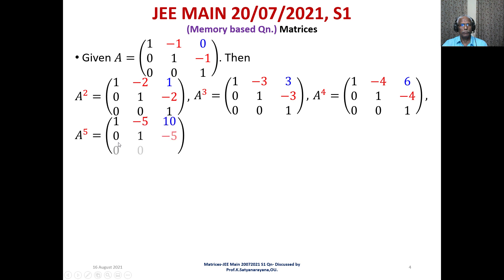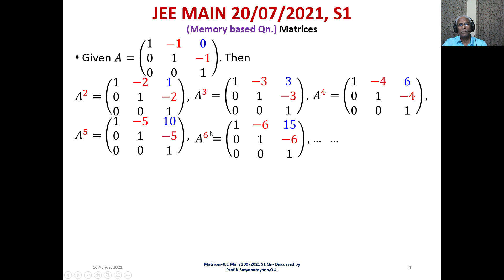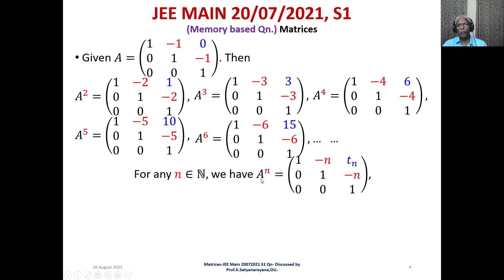A⁵ and A⁶ continue the pattern. For A⁶, the diagonal entries are all 1, and the (1,2) and (2,3) elements vary with a minus sign of the index. For any n ∈ ℕ, A^n equals the 3×3 matrix with entries: diagonal all 1s, (1,2) entry = -n, (2,3) entry = -n, and (1,3) entry = tₙ.